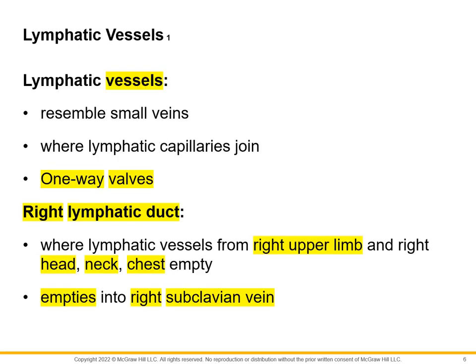Lymphatic vessels look like small veins and they have one-way valves. The right lymphatic duct is where lymphatic vessels from the right upper limb, right head, neck, and chest empty into. The lymph fluid coming from the right upper limb and the right side of the head, neck, and chest passes through the right lymphatic duct, which eventually empties into the right subclavian vein.